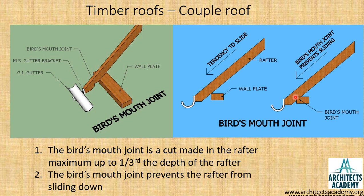When making the cut in the rafter for the bird's mouth joint, the cut is made only up to a depth of about one-third the depth of the rafter and not more than that. If a bigger cut is made, it will weaken the rafter. This is how and why the bird's mouth joint is formed.